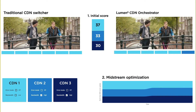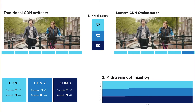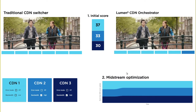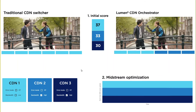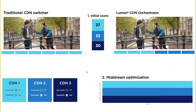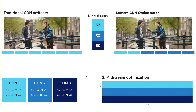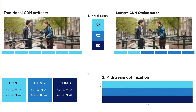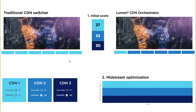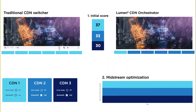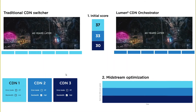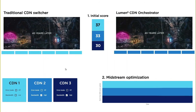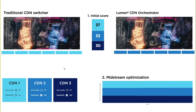The traditional CDN switcher, meanwhile, is still streaming from CDN1, as it does not have the ability to switch CDNs midstream. And you can probably guess what's going to happen when the buffer empties — and there it is. The player not using CDN Orchestrator selects a lower quality track to prevent rebuffering.